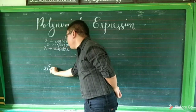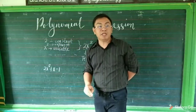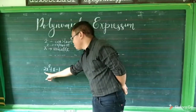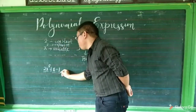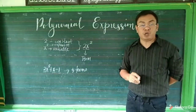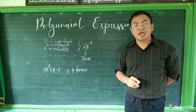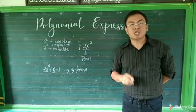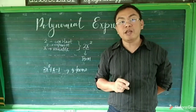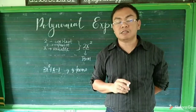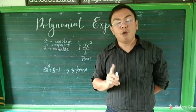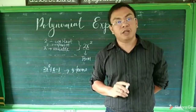For example, 2x squared plus x minus one — how many terms are there? In this example, we have three terms. We need to understand terms because polynomials are composed of terms. Polynomials are algebraic expressions of one or more terms consisting of constants multiplied by one or more variables raised to a non-negative integral power.